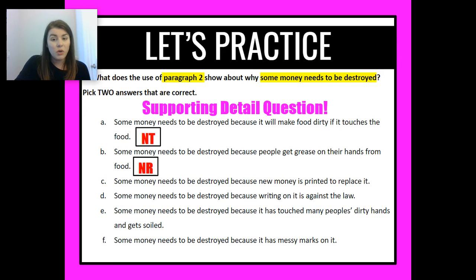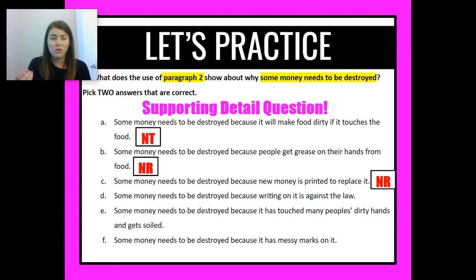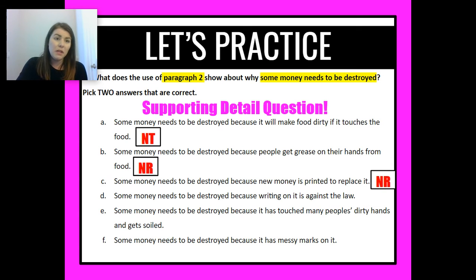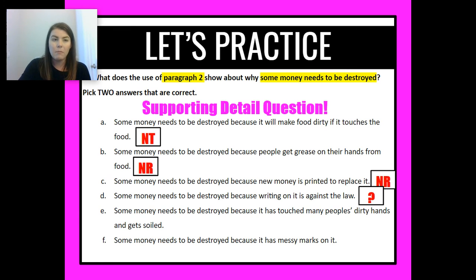Answer C: some money needs to be destroyed because new money is printed to replace it. This also doesn't seem relevant — I'm trying to find what paragraph two shows about why money needs to be destroyed. This answer is really about replacing money, not about it being destroyed because it's dirty and gross. Answer D: some money needs to be destroyed because writing on it is against the law. Paragraph two did talk about how writing on money is against the law and that could be a reason it should be destroyed. I'll leave a question mark there and come back to it.